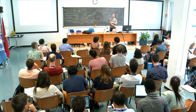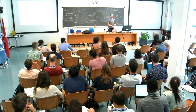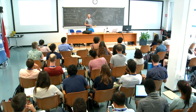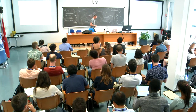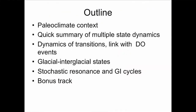I'll start by summarizing the paleoclimate context, giving some indication of what type of paleoclimate change I'm interested in and which part of the last few million years we are focused on. I'll give a quick summary of multiple-state dynamics — a repeat of what Brian did yesterday. Then we'll get into the subject: what transitions between multiple states are interesting to interpret Dansgaard-Oeschger events. Then we'll switch to glacial-interglacial cycles, talk about stochastic resonance, and there may be a bonus track if I'm not too late.